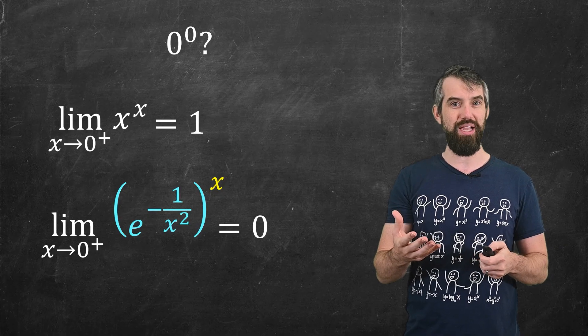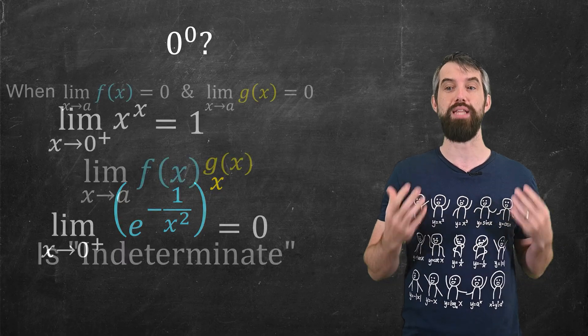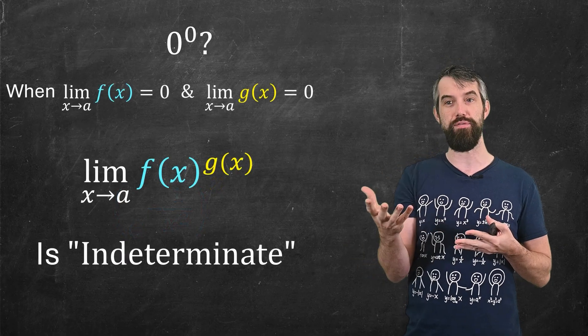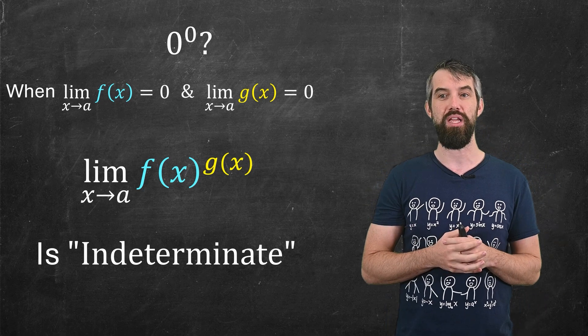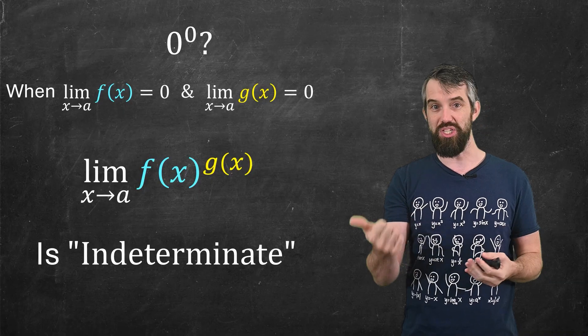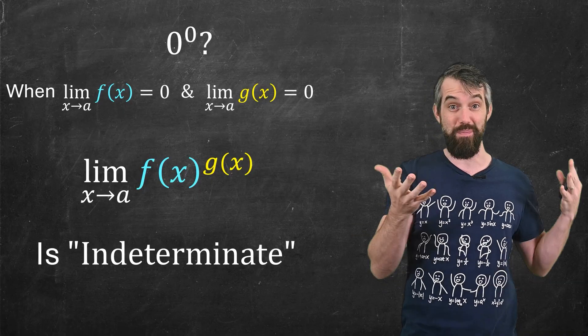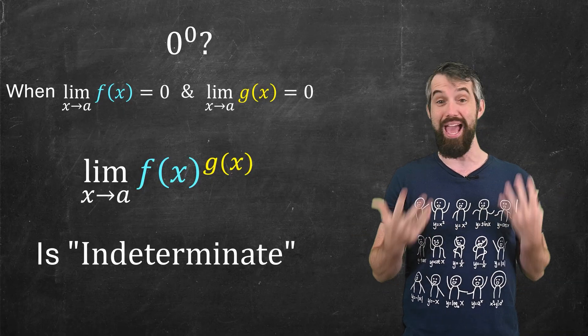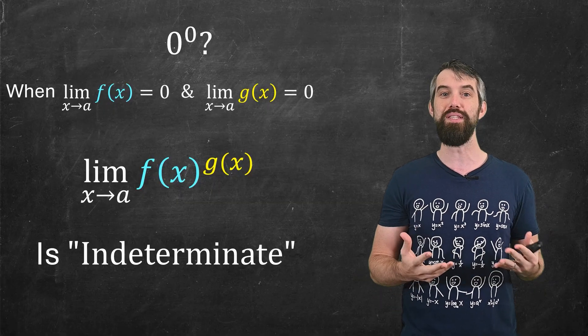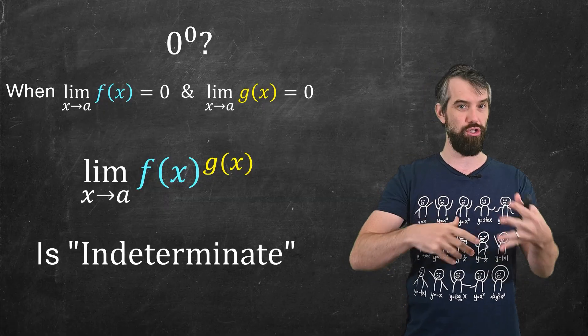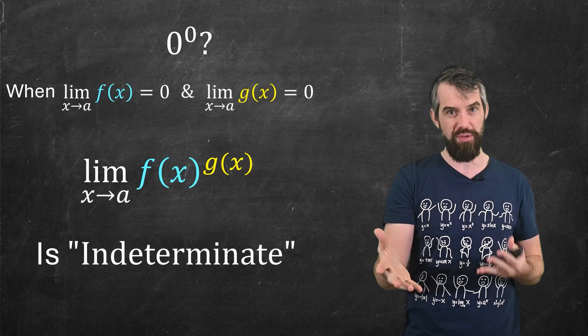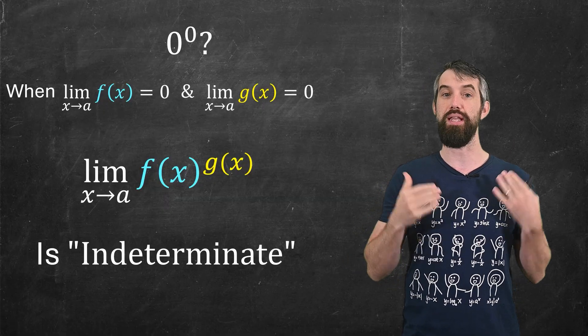So the point is, if I'm going to consider the general context of f to the power of g, where my f is going to zero in a limit and my g is going to zero in a limit, the answer could be zero, it could be one, it could be infinity, it could be pi, you can make an example that will be anything that you want. And that's why we say it's indeterminate. If I'm interpreting zero to zero as a sort of limiting process in this calculus sense, then we're going to call it indeterminate.